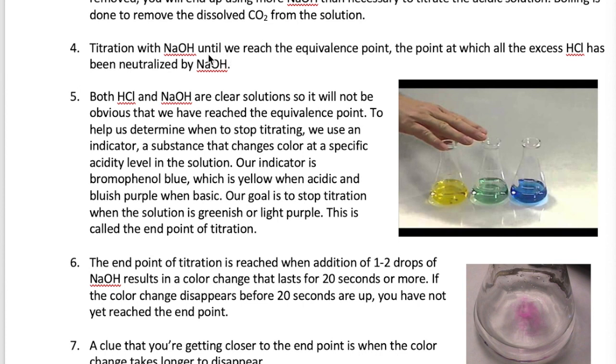Now, we want to titrate using NaOH to the equivalence point, which is just the point when the number of moles of NaOH is equal to the number of moles of the remaining HCl. Since both HCl and NaOH are colorless, we use a third substance called an indicator to tell us when to stop titrating. The indicator changes color when the titration is near the equivalence point. The point when the indicator changes color is what we call its endpoint.